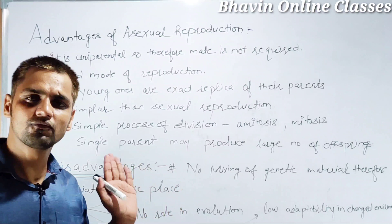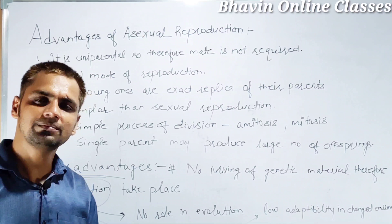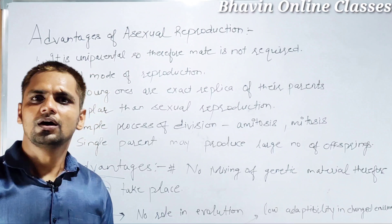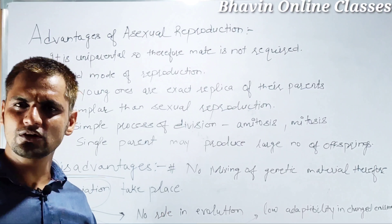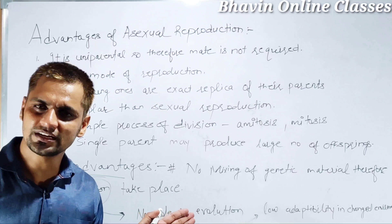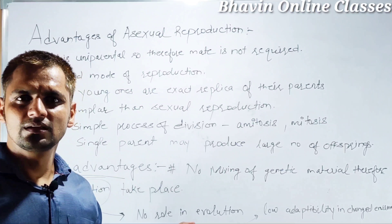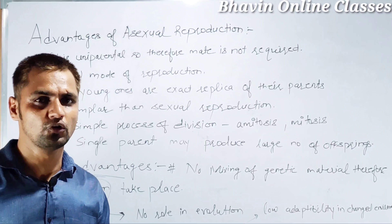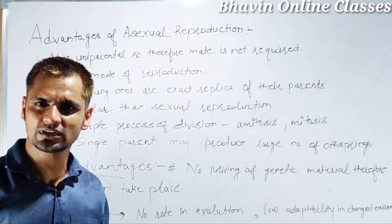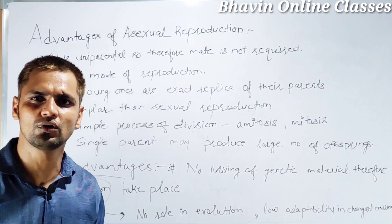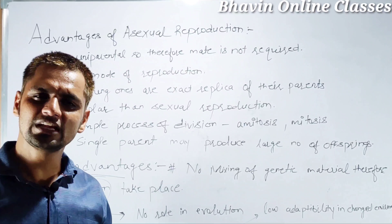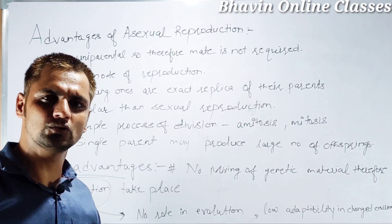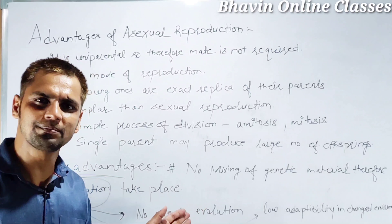The division involved is mitotic, and from a single parent a large number of offspring can be produced. These are the advantages. The disadvantages are: when it is a rapid mode of reproduction, overcrowding results, and there is no mixing of genetic material, so variation does not take place. Because there is no variation, evolution does not occur, and asexual reproduction does not have any role in evolution.